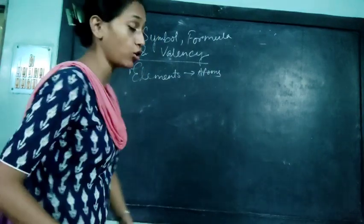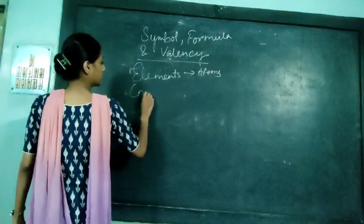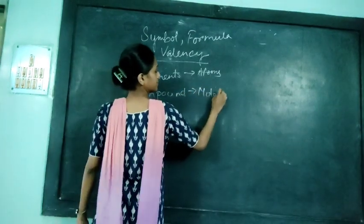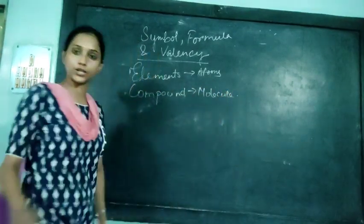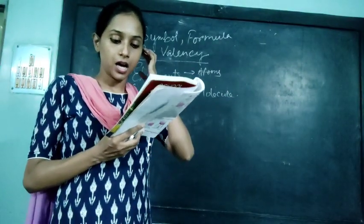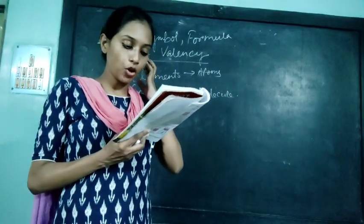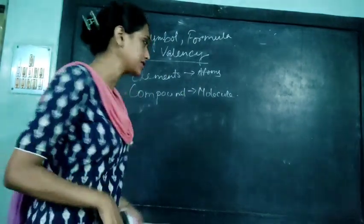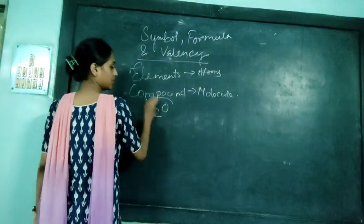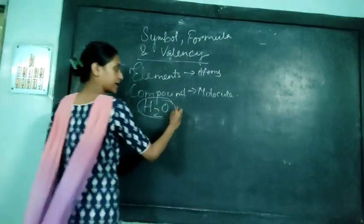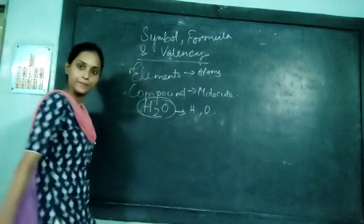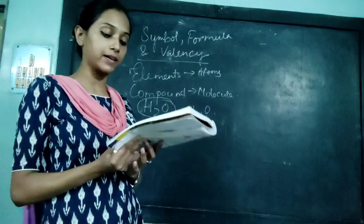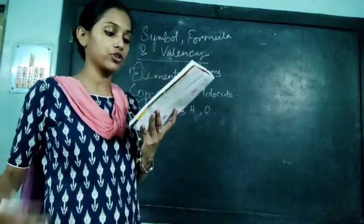A compound is a substance consisting of two or more elements which combine chemically in a definite proportion. The smallest particle of a compound is a molecule. The molecules of a particular compound can be broken down into its constituent elements — basically like H2O. We can break it down into hydrogen and oxygen, which are the elements that combine to form this compound. So we can break a compound down to get its elements.